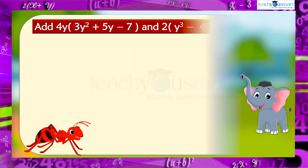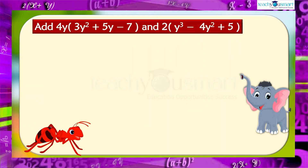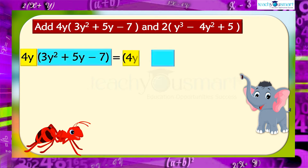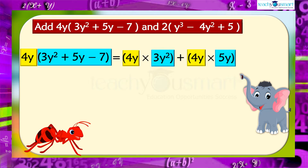The first expression is 4y multiplied by 3y squared plus 5y minus 7, equals 4y multiplied by 3y squared, plus 4y multiplied by 5y, minus 4y multiplied by 7, equals 12y cubed plus 20y squared minus 28y.